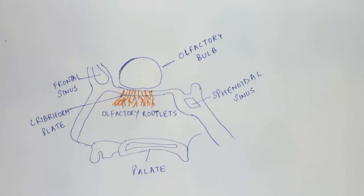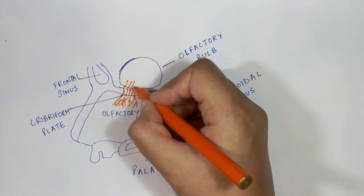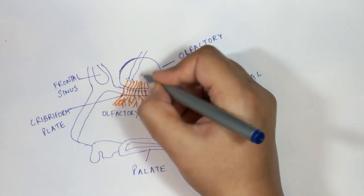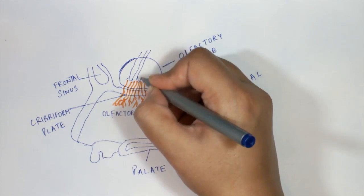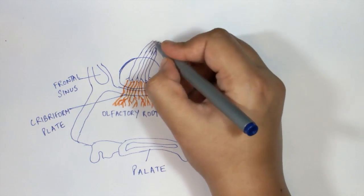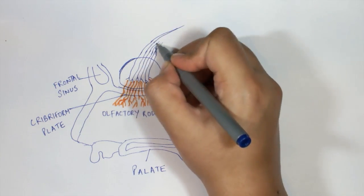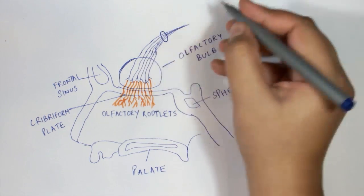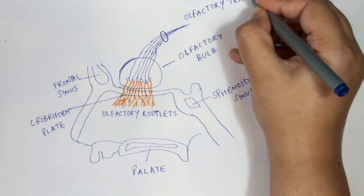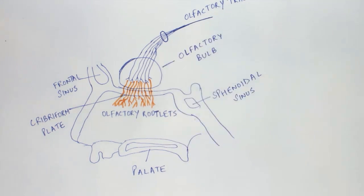The olfactory bulb lies on the superior part of the cribriform plate. The olfactory nerves enter the olfactory bulb and here they synapse with the mitral and tufted cells. The processes of the mitral and tufted cells continue posteriorly as the olfactory tract, which enters into the primary and secondary olfactory cortex.